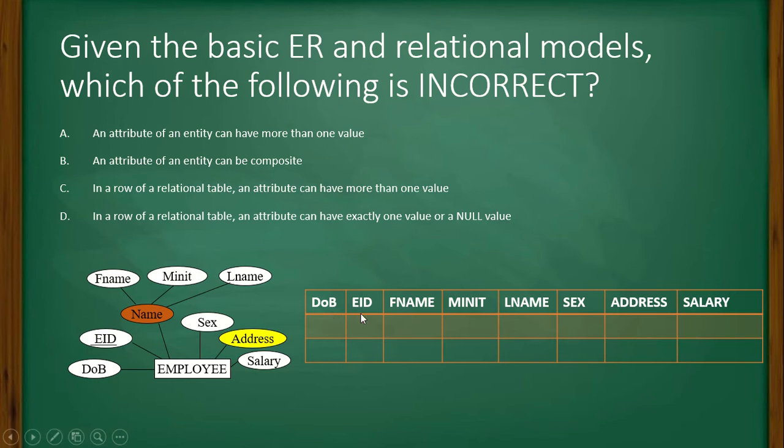See, DOB, employee ID, and the composite attribute is splitted into three different columns. And address here, I have kept here for the time being.